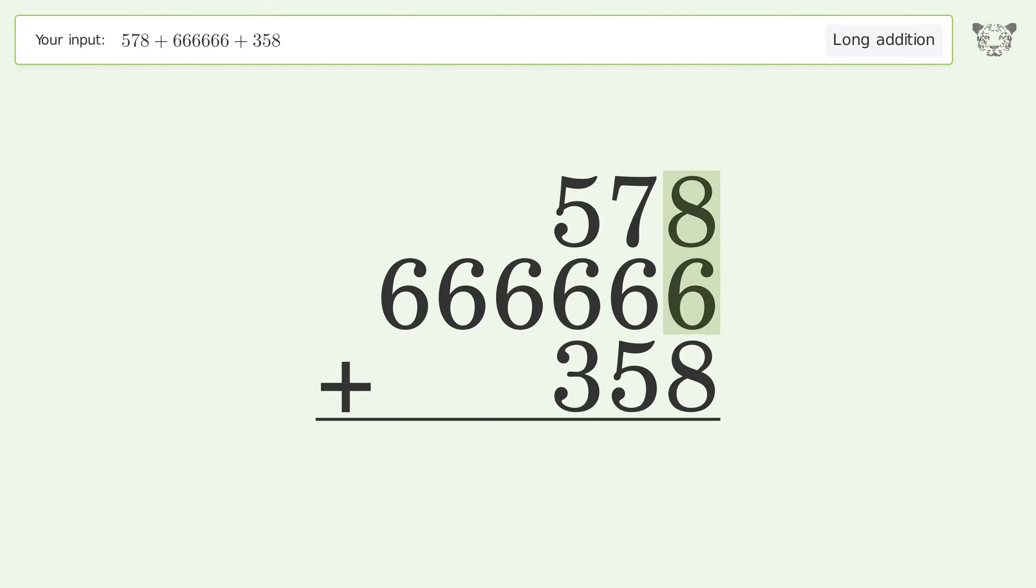8 plus 6 plus 8 equals 22, carry 2 to the tens place. 2 plus 7 plus 6 plus 5 equals 20, carry 2 to the hundreds place.